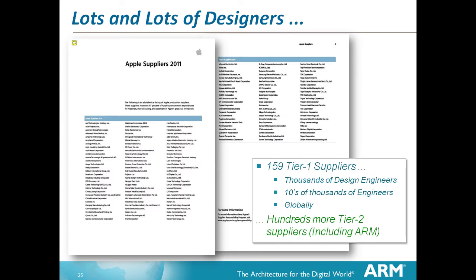Apple were put into a corner a few years ago, accused of doing everything themselves by the American government, and so they produced a report listing 159 Tier 1 suppliers — people supplying technology for the final product assembly. This represents thousands, even tens of thousands, of design engineers globally. And ARM is still not on that list, because ARM isn't a Tier 1 supplier — ARM is a Tier 2 supplier, feeding into the component suppliers to Apple. That tells you how many levels there are in this game and just how worldwide this activity really is.